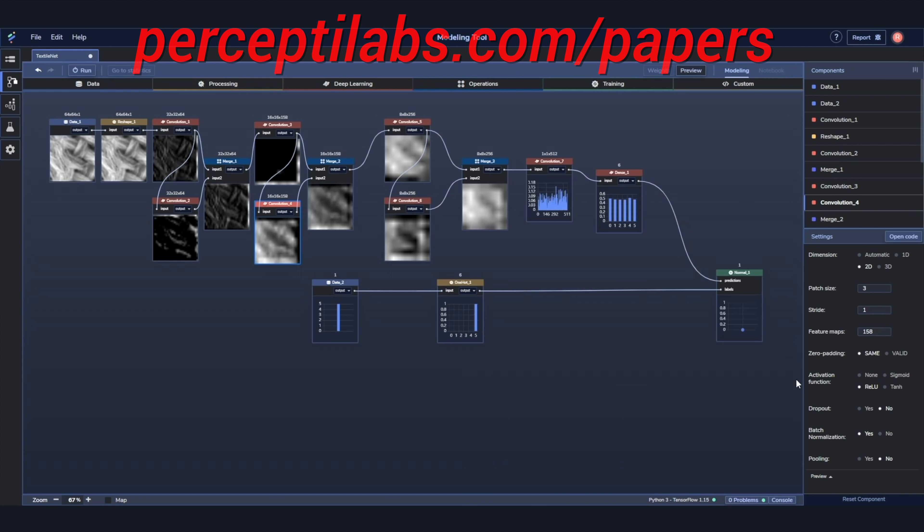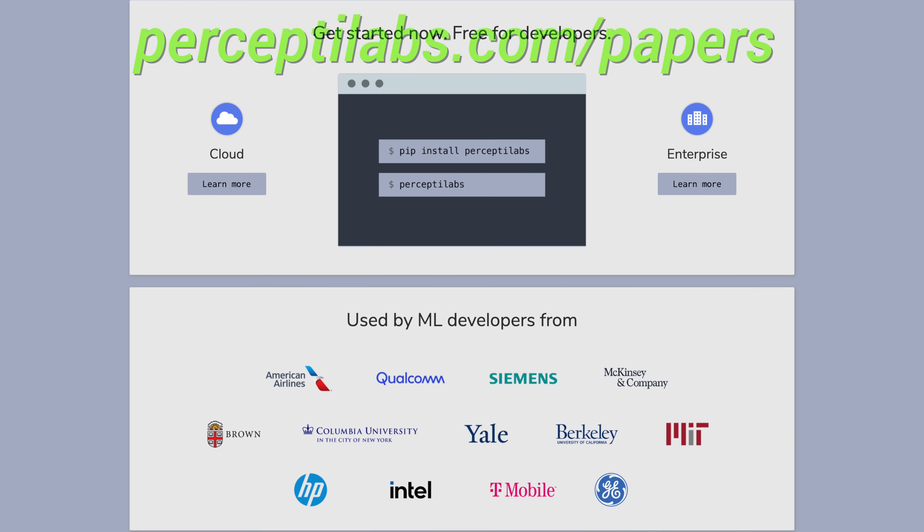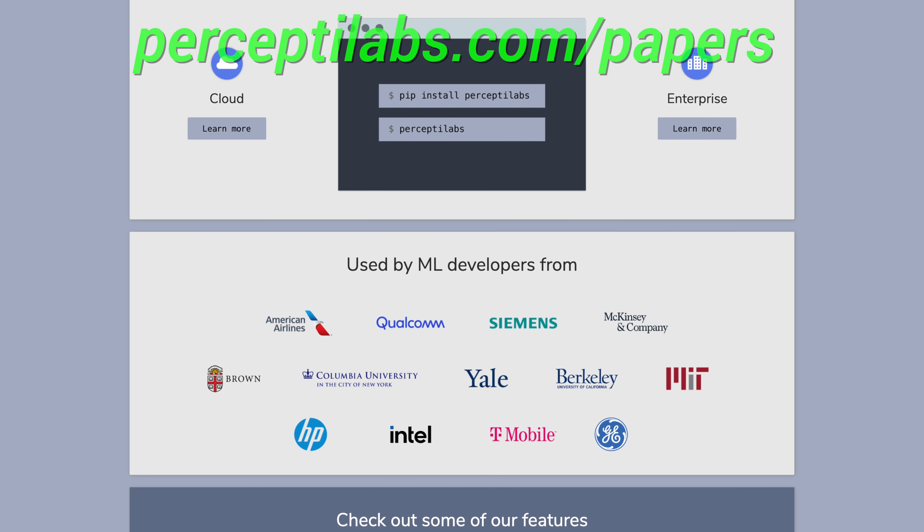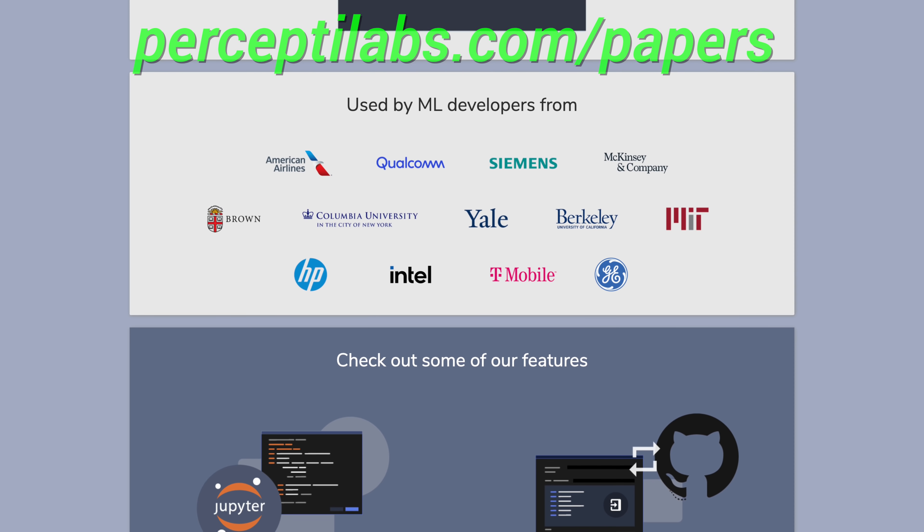I only wish I had a tool like this when I was working on my neural networks during my PhD years. Visit perceptilabs.com/papers to easily install the free local version of their system today.